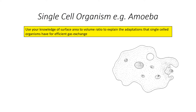Think about Fick's Law and try to identify how a single cell organism such as an amoeba is adapted for the maximum rate of gas exchange. Pause the presentation, spend a maximum of two minutes coming up with your answer, and when you're ready you can restart the presentation.